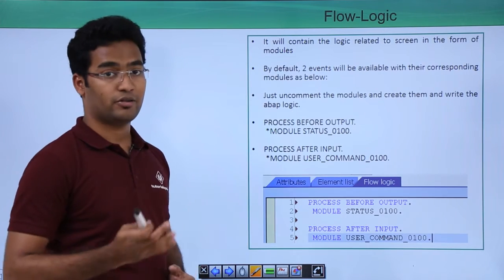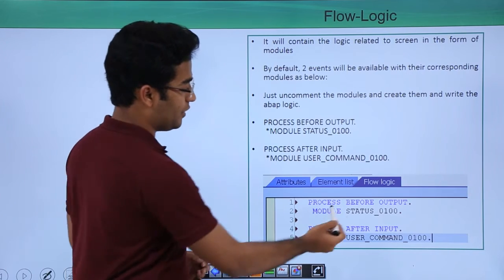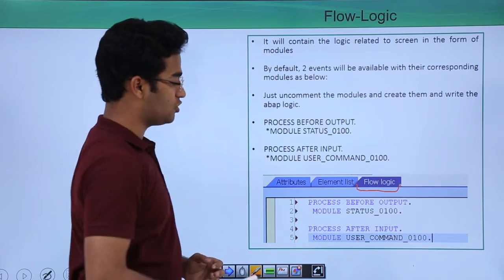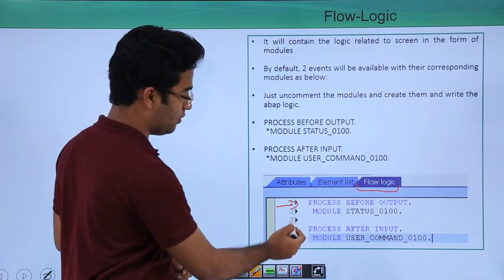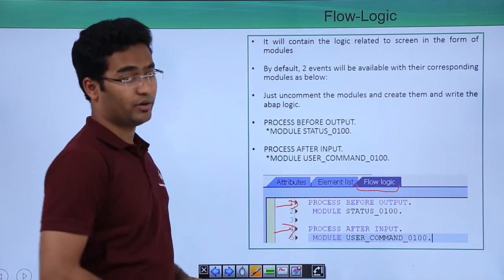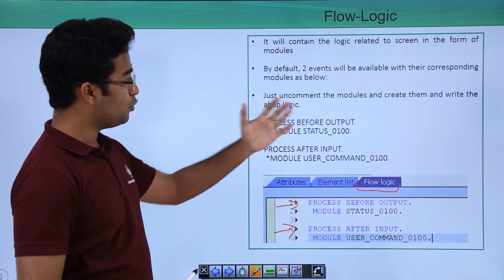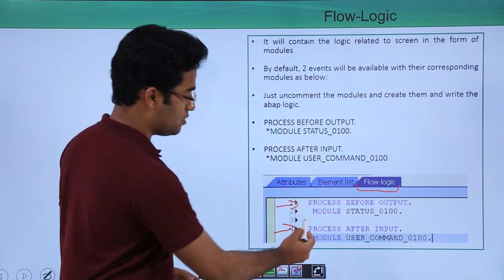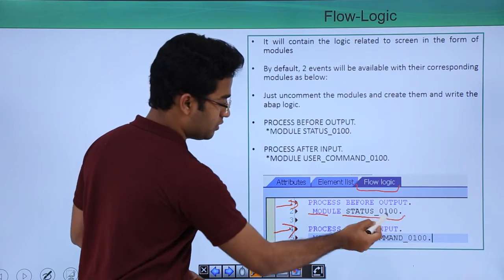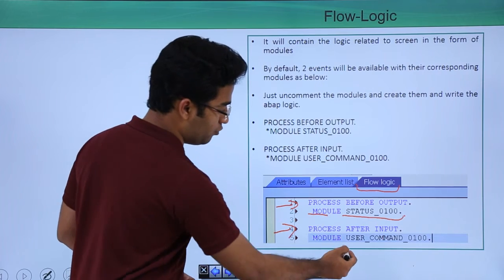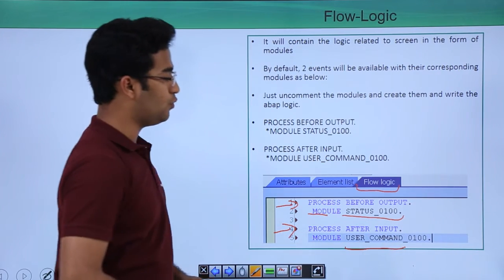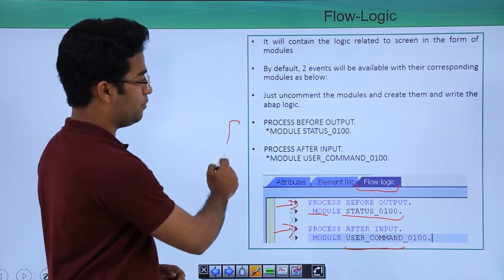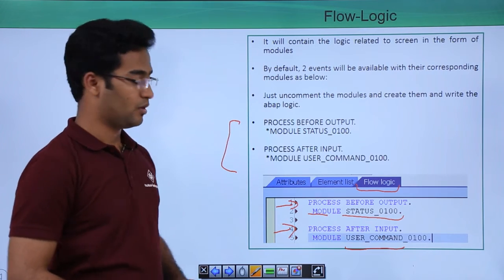Now let us see what is exactly the flow logic. Here we can see a tab here which is flow logic here our PBO event is declared and the PAI event is also declared. By default two events will be available with the corresponding modules. This is the modules here and the name of the module is status 0100 and user command underscore 0100. This is the PBO event and PAI event in flow logic.